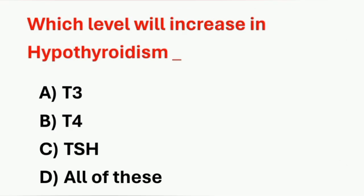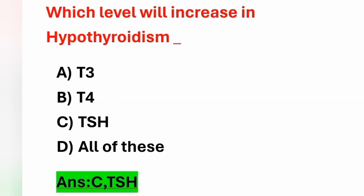Next question: which level will increase in hypothyroidism? Option A: T3, option B: T4, option C: TSH, option D: all of these. The correct answer is TSH, option C. In hypothyroidism, T3 and T4 levels are decreased, so TSH increases as a negative feedback mechanism.